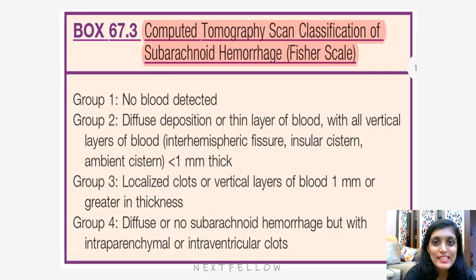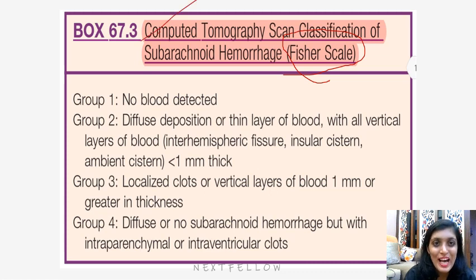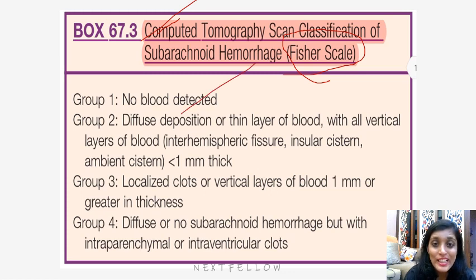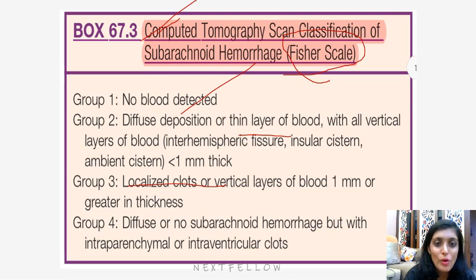The Fischer scale is a CT scan scale for subarachnoid bleed. Group 1 is no blood detected. Group 2 is diffuse deposition or a thin layer of blood with all vertical layers of blood. Group 3 is localized clots or a vertical layer of blood 1 mm or greater in thickness. Group 4 is diffuse or no subarachnoid image with intraparenchymal or intraventricular clots.